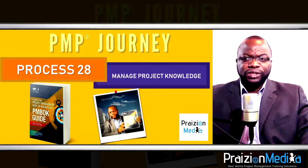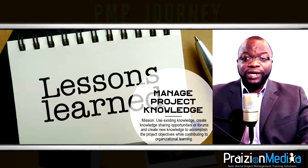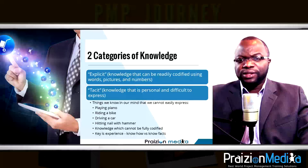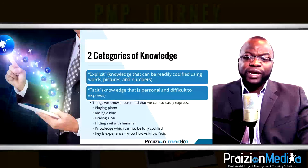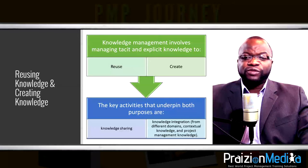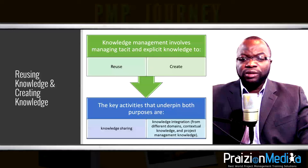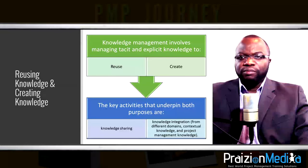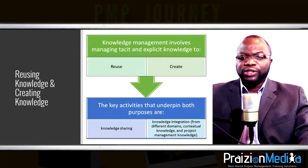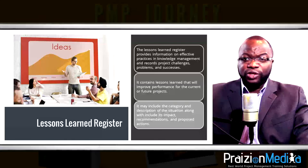Process 28: Manage project knowledge. We consider two types of knowledge: explicit knowledge, which is easy to codify but difficult to contextualize, and tacit knowledge, which is easier to contextualize than codify. Project managers and teams should obtain this knowledge from experts, and provide a conducive, trust-based environment for sharing — such as communities of practice, networking events, coaching, and mentoring. Much of this can make its way into the lessons learned register.